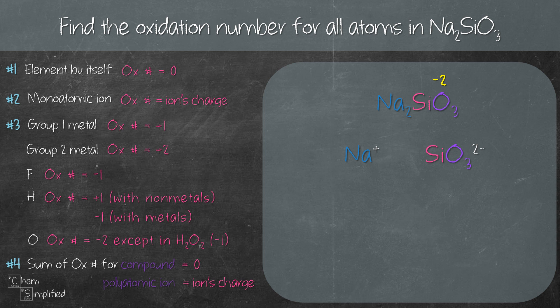So since Na is a monoatomic ion, that means the oxidation number for Na is plus 1. Next we can move on to finding the oxidation number for Si.